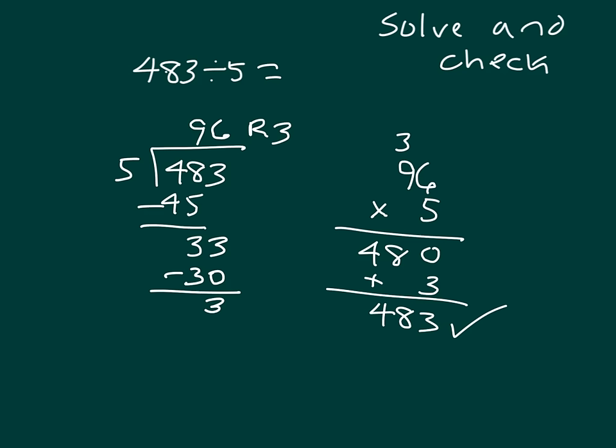Then, our solution there checks. Let's write our solution here as well. 483 divided by 5 equals 96, remainder 3. This is our quotient. This is our dividend, what we were dividing, and this is our divisor.